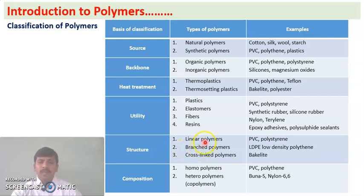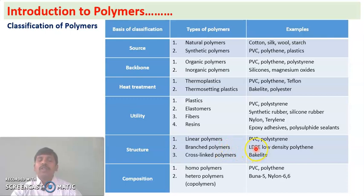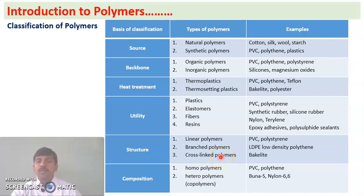The next classification is based on structure. Based on structure, polymers are classified into three types: linear polymers, branched polymers, and cross-linked polymers. Linear polymers have a linear structure — examples are polyvinyl chloride and polystyrene. Branched polymers have branches on the polymer chains — example is low-density polythene. Cross-linked polymers have linear chains with cross-linkages between them, forming a three-dimensional structure. The best example is Bakelite.